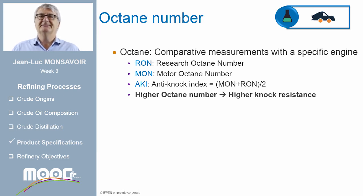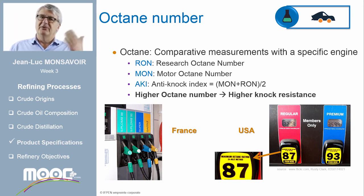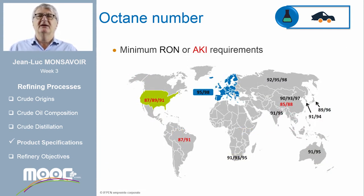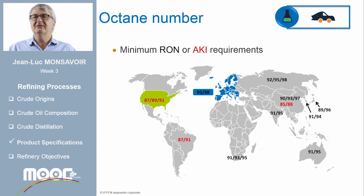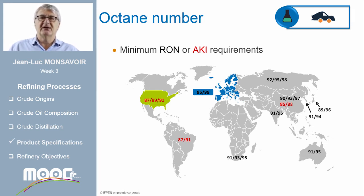When the octane number increases, the gasoline has higher knock resistance. At the pump in Europe, 'Unleaded 95' means the RON is higher than 95 — this is the regular value. In the United States, '87' means the anti-knock index (average of RON and MON) is higher than 87. Octane limits are set at the state level in the US: generally 87 for regular fuel, 89 for mid-grade, and 91 for premium. In Europe and Asia, it is the minimum RON indicated at the pump. A map shows the octane limits in several countries worldwide.